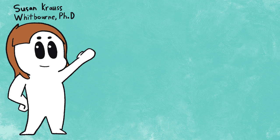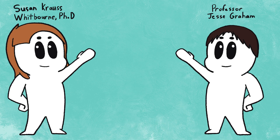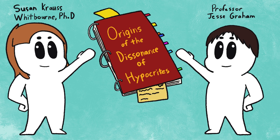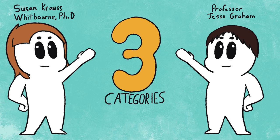An article by Susan Krauss Whitbourne PhD referred to a study by University of Southern California psychology professor Jesse Graham and colleagues that documented the origins of the dissonance that hypocrites have and classified it into three categories.